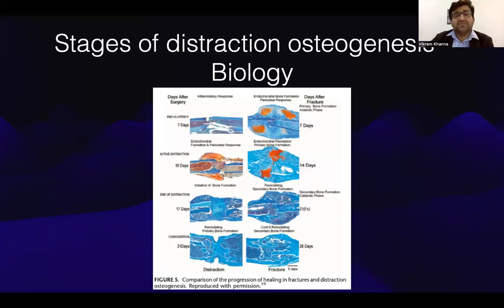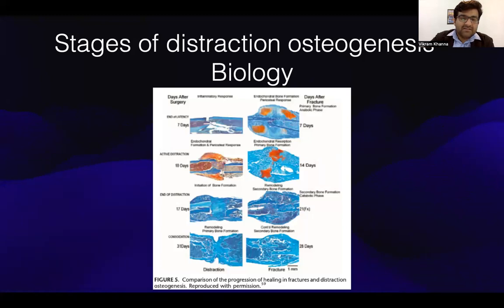Coming to the stages of distraction osteogenesis — these are the histological images of the various stages. At the end of the latency period, we can see an inflammatory response. After distraction occurs, some amount of bone formation is visible. After 31 days, consolidation and remodeling can be observed.